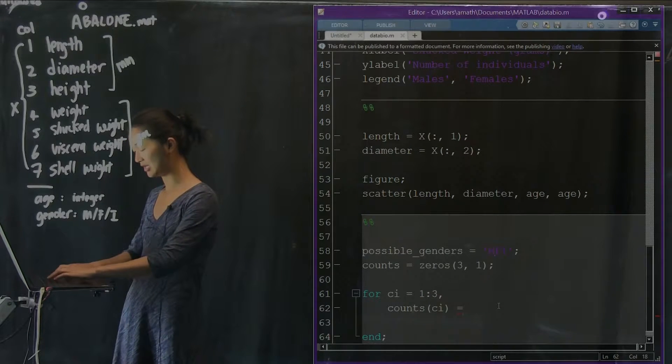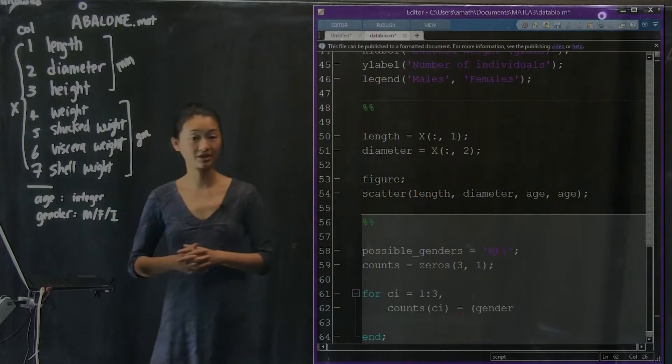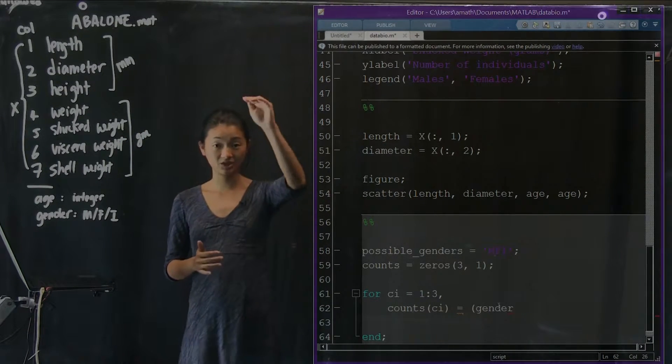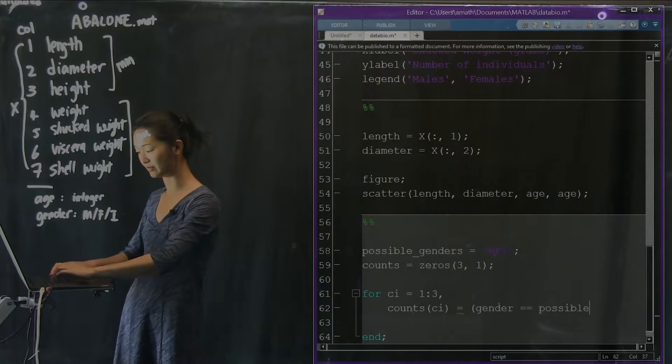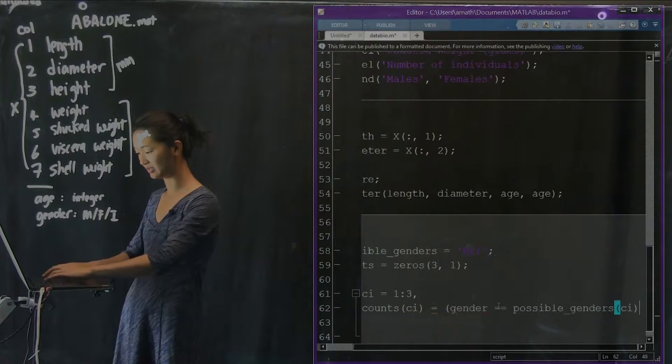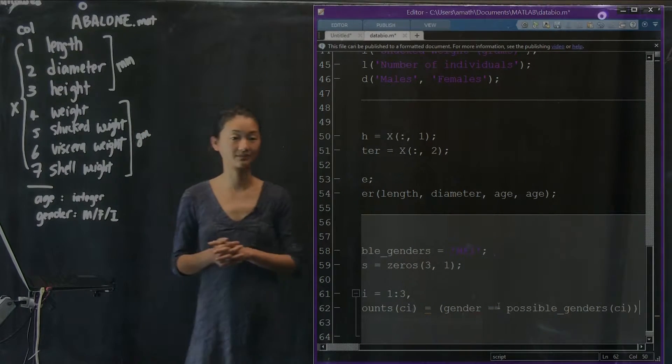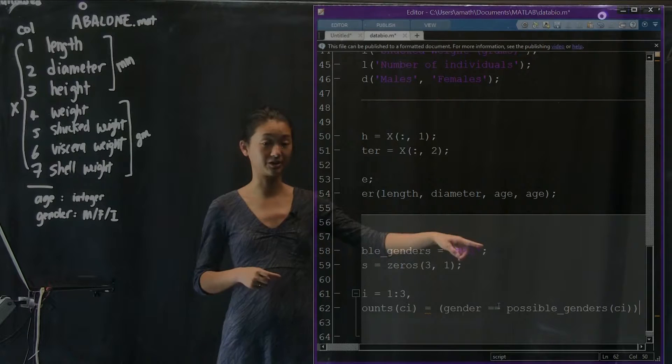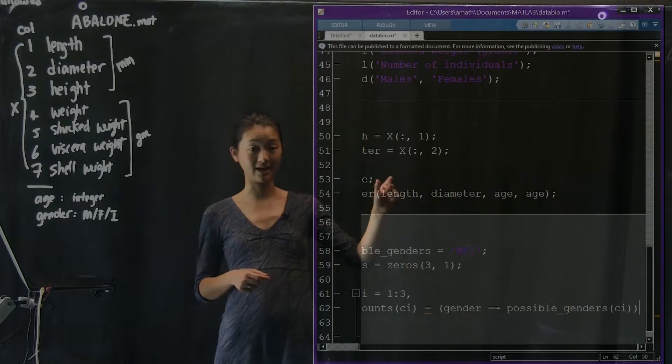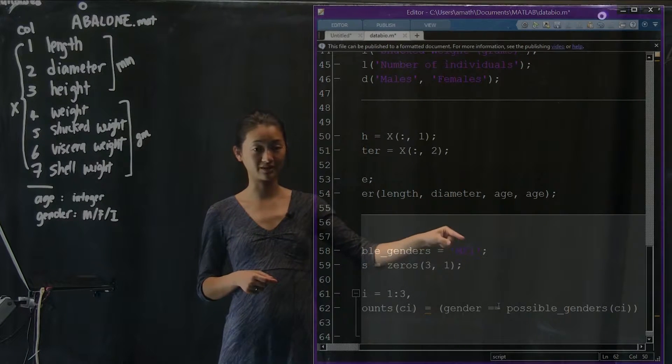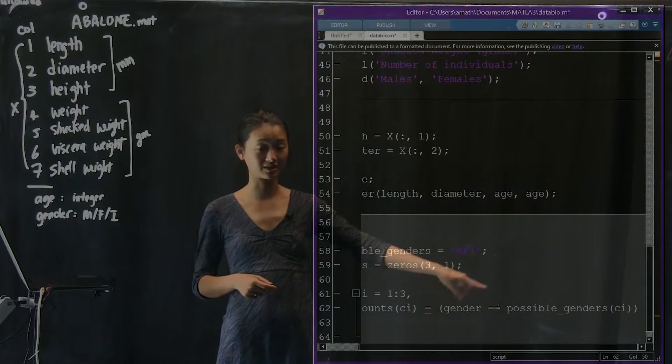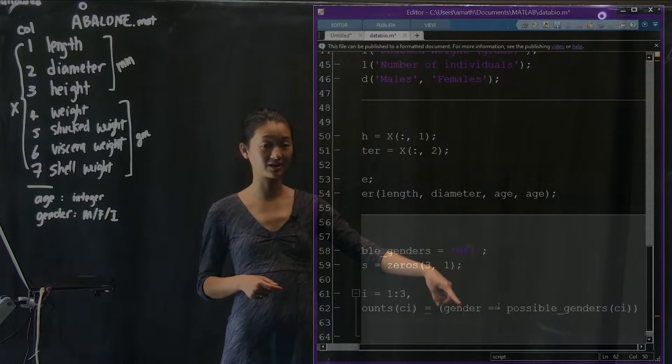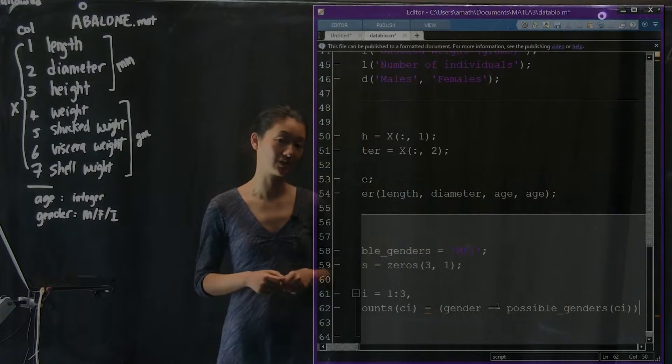The conditional statement is the following. If you look at the entire gender vector, does each element equal to one of the possible genders? I'm going to make that ci. So possible genders 1 is the letter m, 2 is the letter f, and 3 is the letter i. So I'm asking the question, does every single element of gender equal one of those letters?